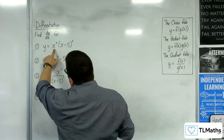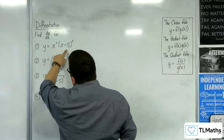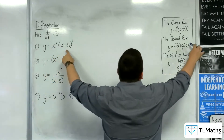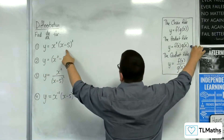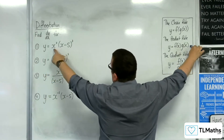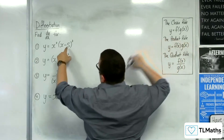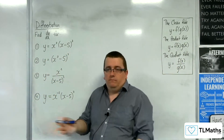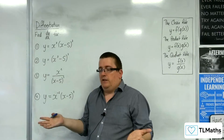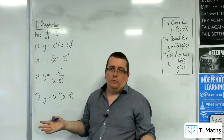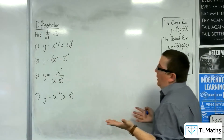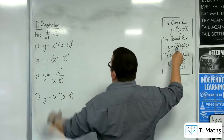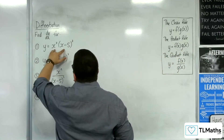You've got one function multiplied by another, so naturally we are going to use the product rule to differentiate this. You could expand the whole thing out and differentiate a polynomial, but we want to be quicker about this, so we're going to use the product rule.